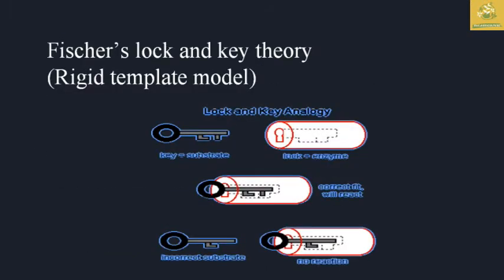The first theory is Fischer's lock and key model. The template model uses the key as the substrate and the lock as the enzyme. When the key and lock correctly fit, a reaction occurs between them. When an incorrect substrate and enzyme are combined, no reaction occurs. That is what was given by Fischer's lock and key theory.